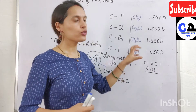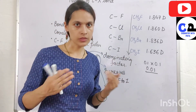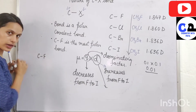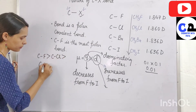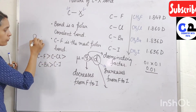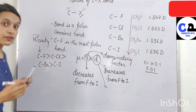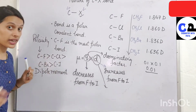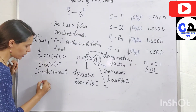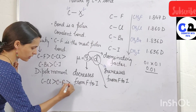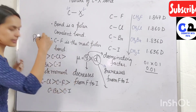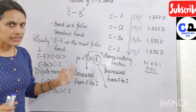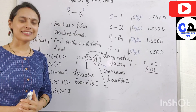So if a question asks you to arrange these bonds in order of polarity, the answer is: C-F is most polar, then C-Cl, then C-Br, then C-I. But if the question asks in respect of dipole moment, the order is: C-Cl has the greatest dipole moment, then C-F, then C-Br, then C-I. This distinction you must keep in mind. This is all about the nature of the C-X bond. That's all for today — I will see you in my next video.